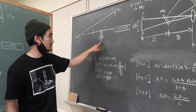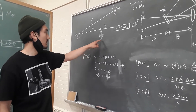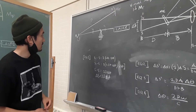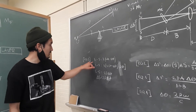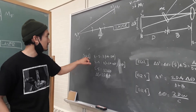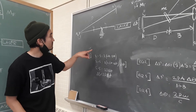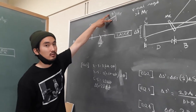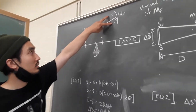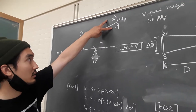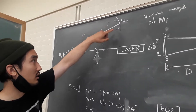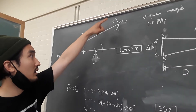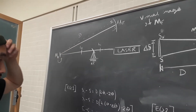and we're going to call that displacement delta S prime. So our first equation, we're going to consider the distance between the two points on which the laser beam hit the fixed mirror, and we're going to call those points: the first point, capital S, and the second point, capital S sub 1.